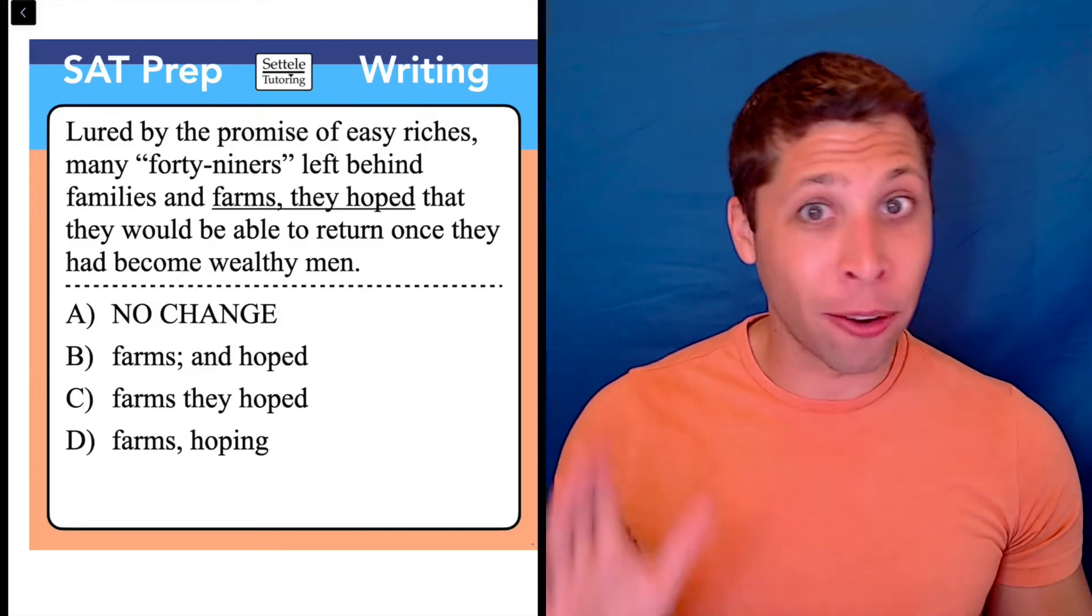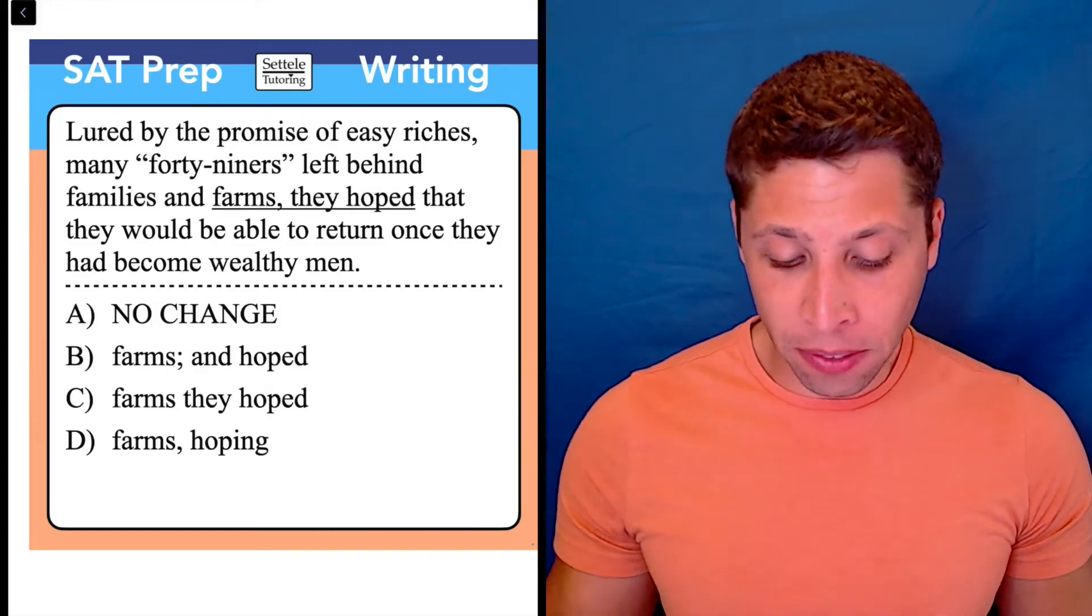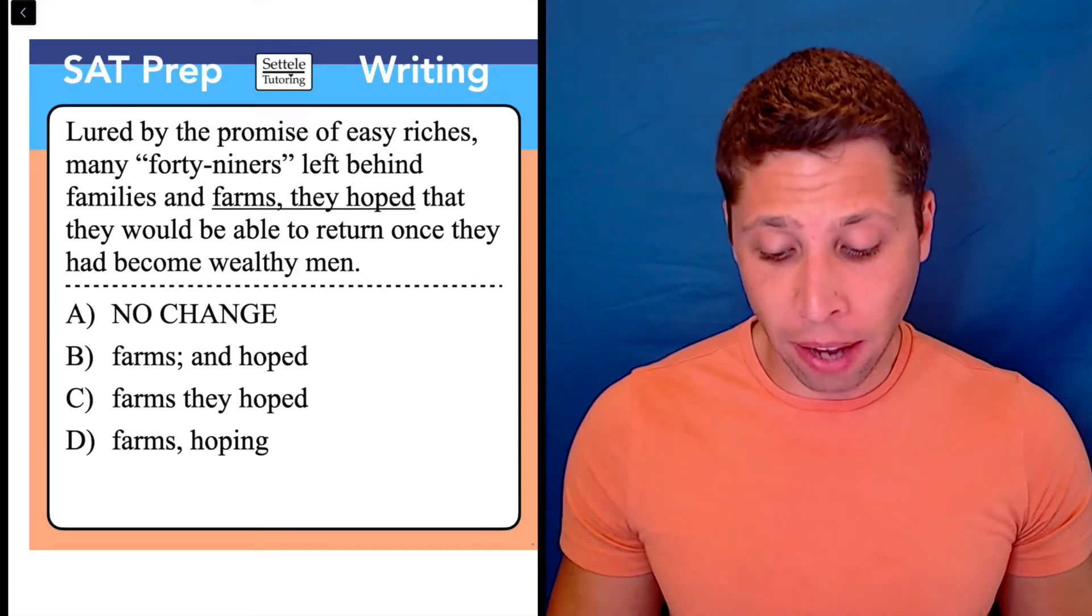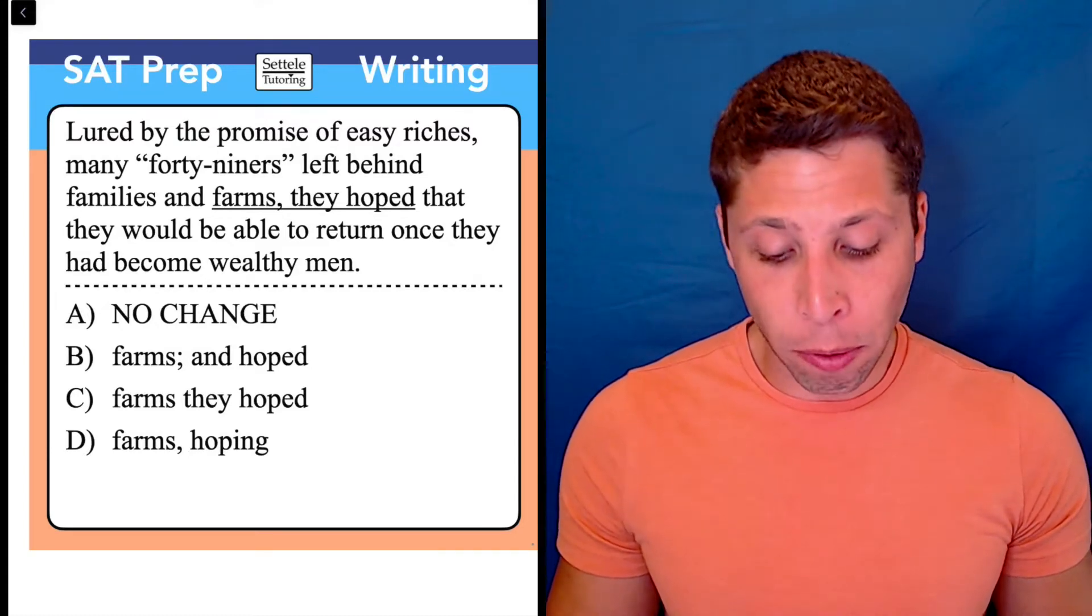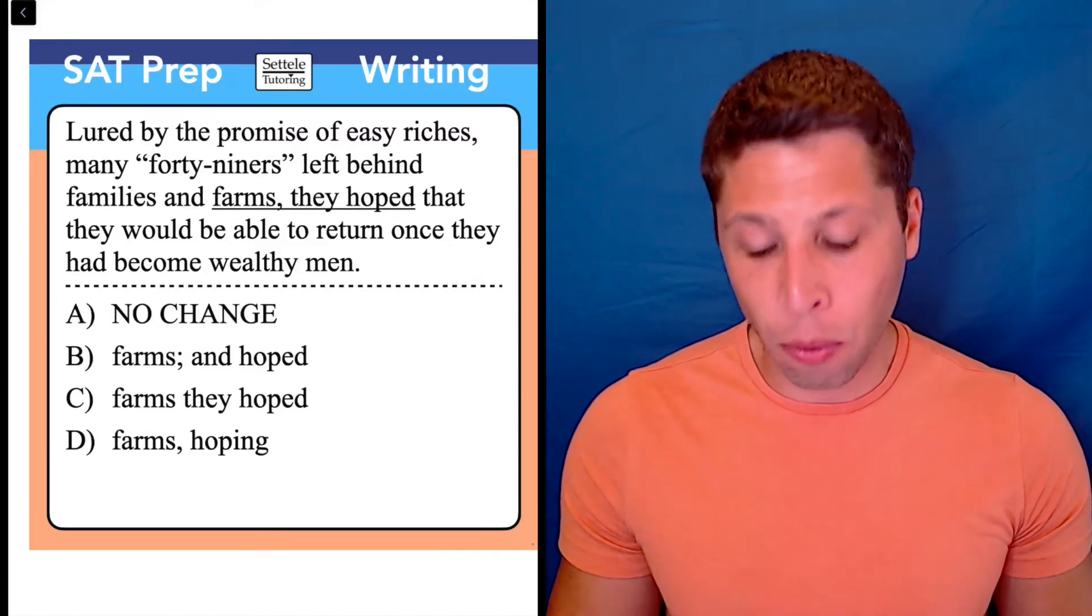I'm going to start by reading this sentence out loud as written. Lured by the promise of easy riches, many 49ers left behind families and farms. They hoped that they would be able to return once they had become wealthy men.